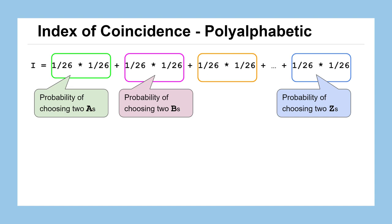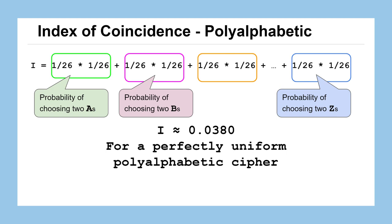For a perfectly uniform polyalphabetic ciphertext — where every character appears exactly 1/26th of the time — the probability of two A's is one over 26 squared, and similarly for every other letter. Doing that calculation gives an Index of Coincidence of 0.038, meaning about a 3.8% chance of picking two of the same letters at random. So the two benchmarks are 0.065 for monoalphabetic and 0.038 for polyalphabetic.